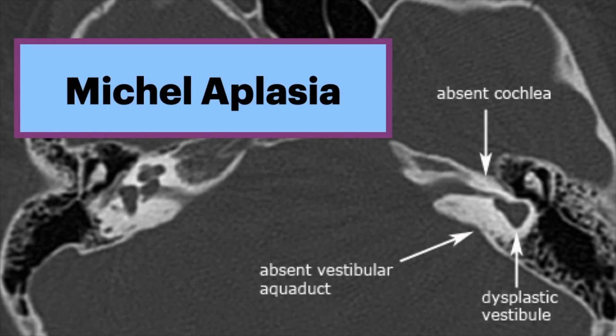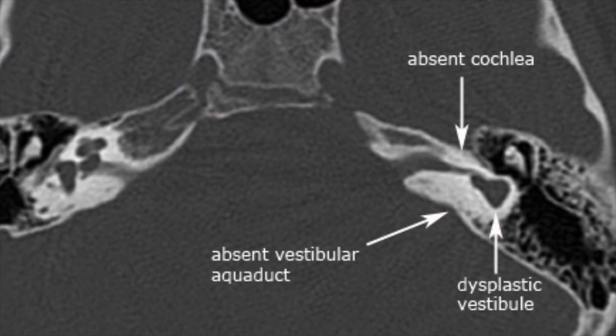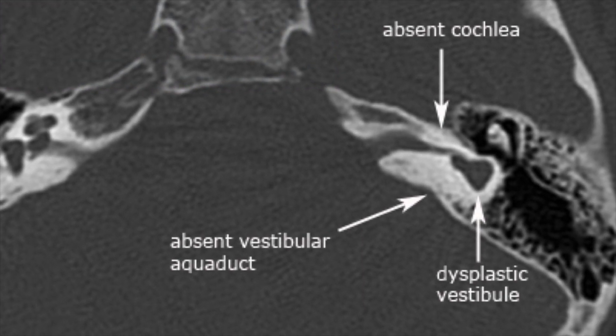Michel aplasia, also known as complete labyrinthine aplasia, is a congenital abnormality of the inner ear. There is absence of the inner ear structures, including the cochlea, vestibule, semicircular canals, and vestibular and cochlear aqueducts. The result is complete deafness.